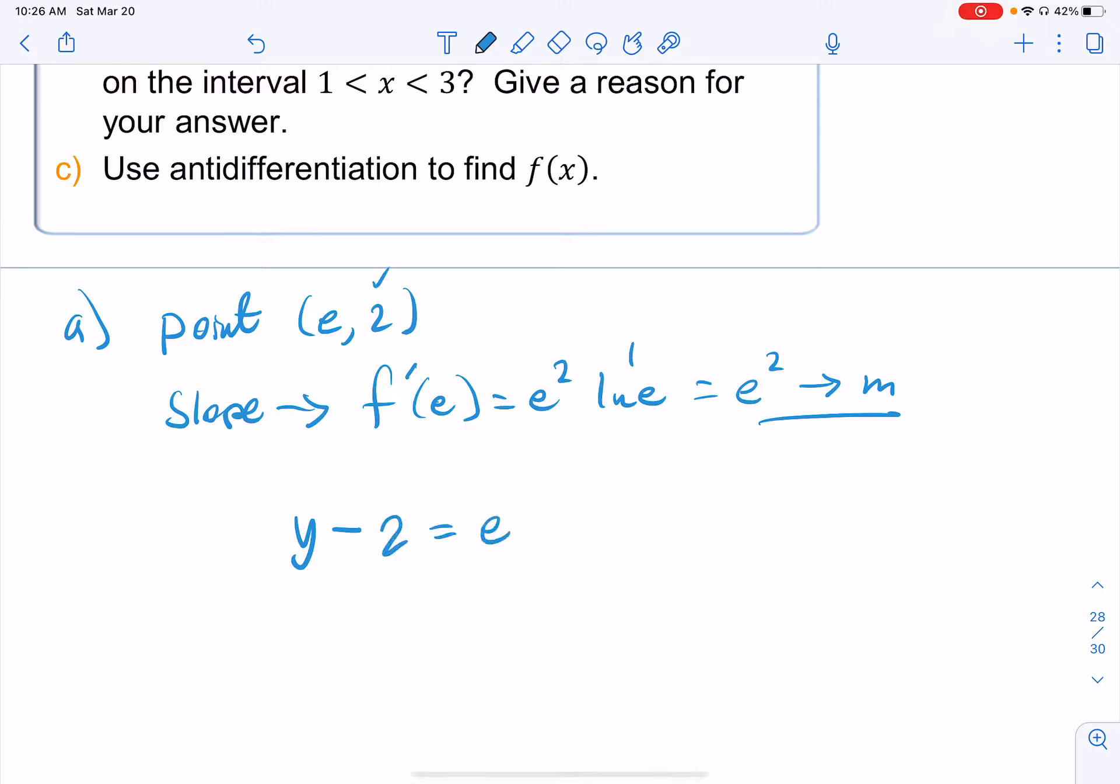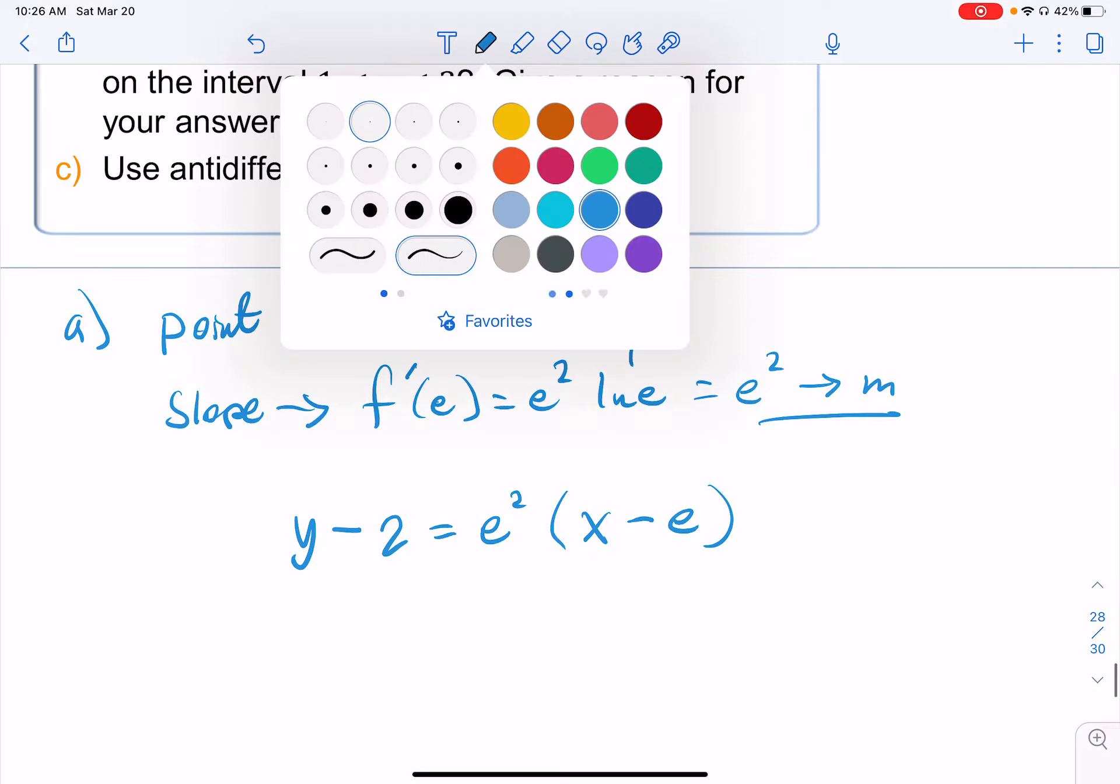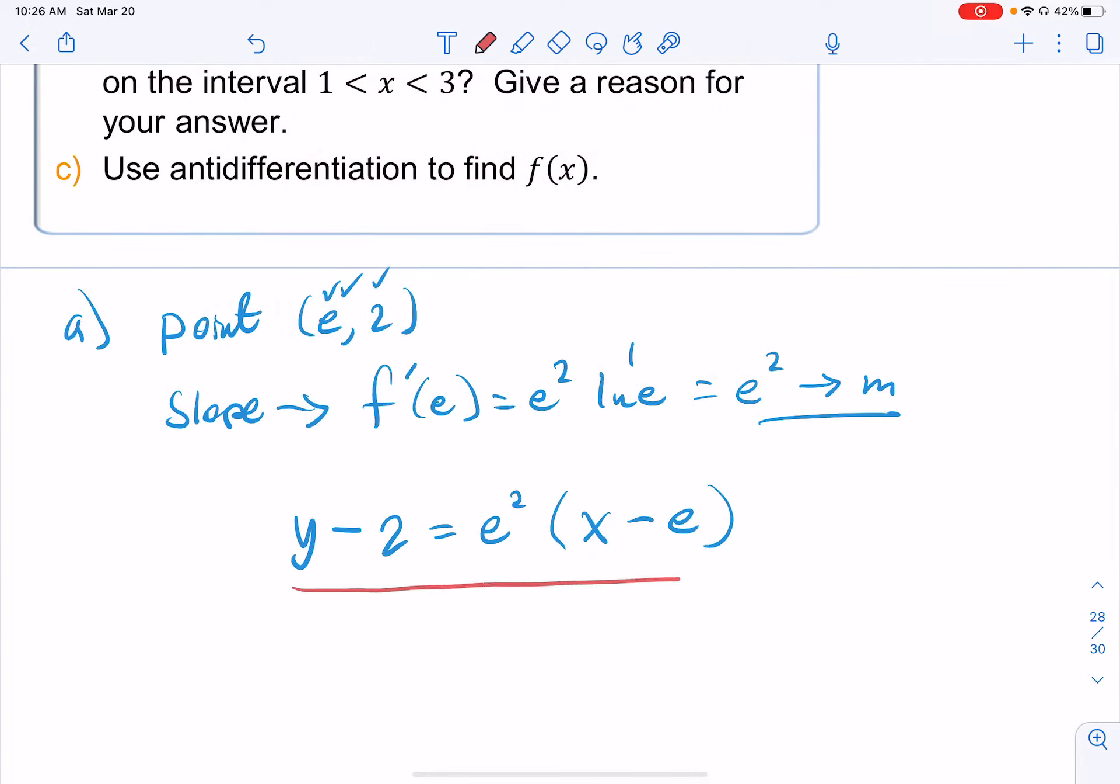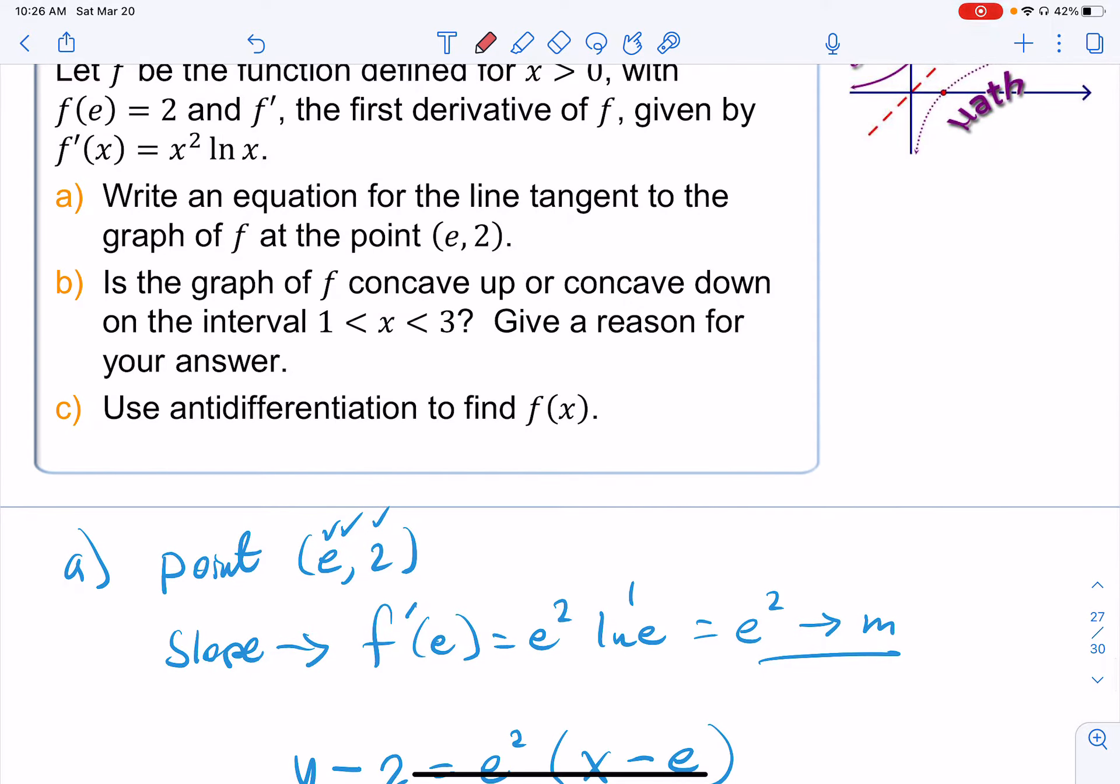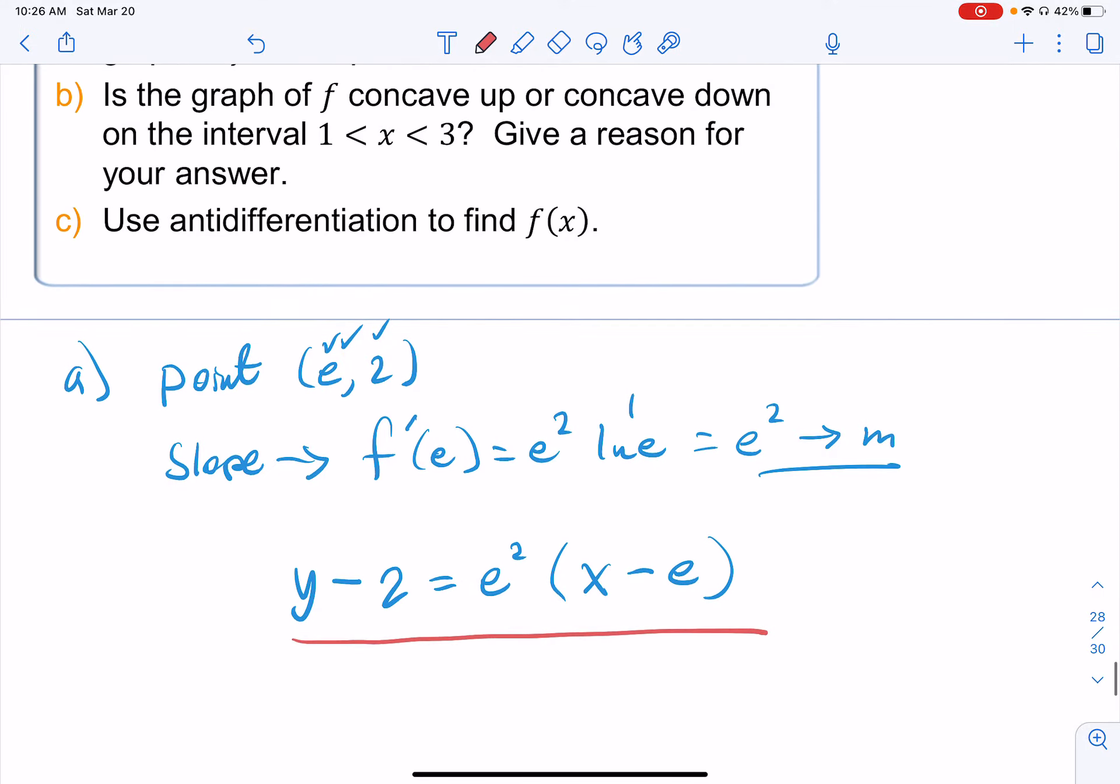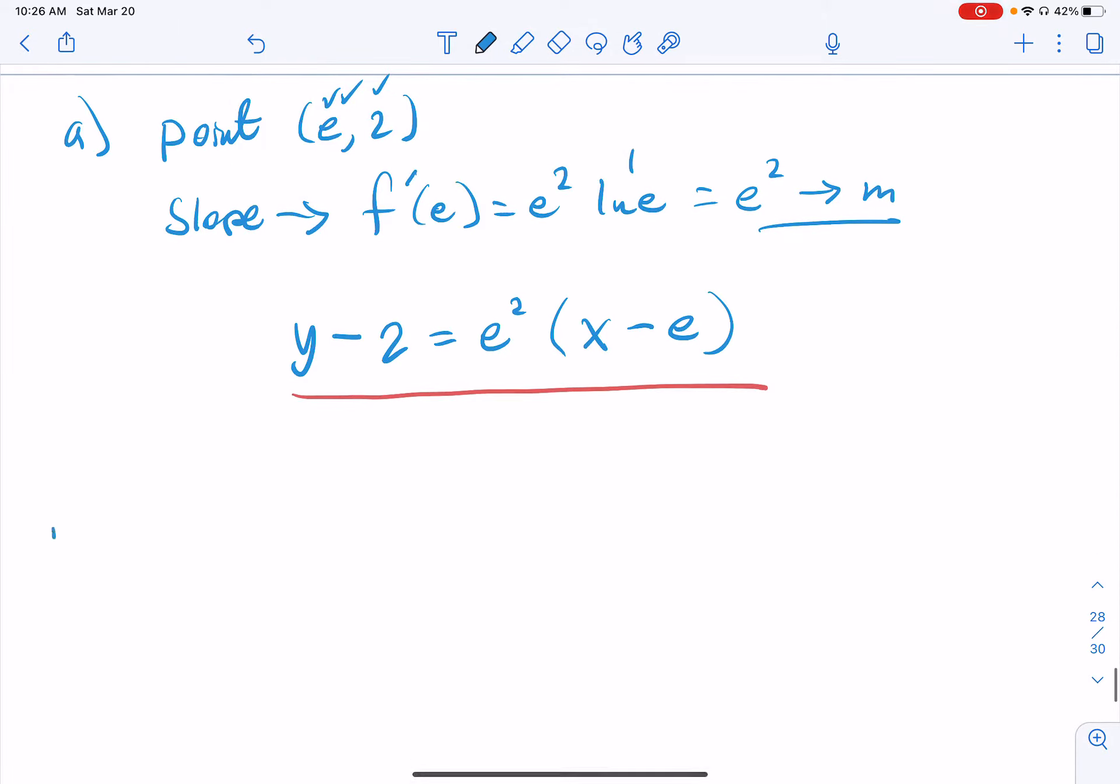Put both of those pieces of information together in point slope form. We have y minus y1, that's our 2, is equal to our slope, e squared that we just found, times x minus x1, which is this x-coordinate there, and then leave it alone. There's no reason for you to distribute your e squared there. You don't have to solve it for y. That's good to go. All right, let's go on to part b. Part b is the graph concave up or concave down on that interval, so we need to look at the second derivative.